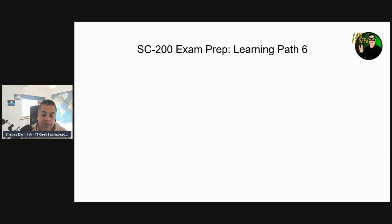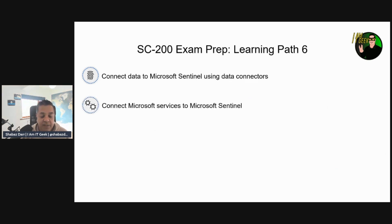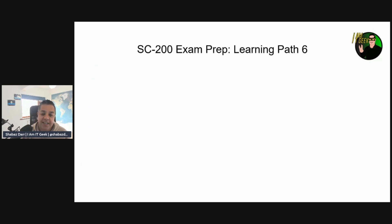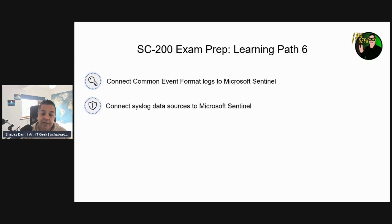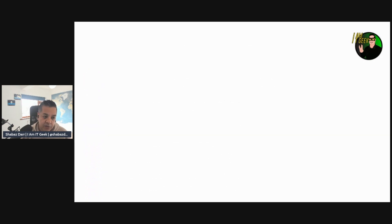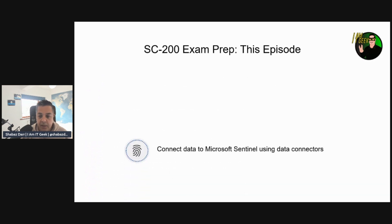Let's discuss what's in Learning Path 6 before we concentrate on what we're doing today. First, connecting data to Microsoft Sentinel using data connectors. Then connecting Microsoft 365 services to Microsoft Sentinel, and connecting Microsoft 365 Defender to Microsoft Sentinel. We'll also cover connecting Windows hosts to Microsoft Sentinel, connecting Common Event Format logs, connecting syslog data sources, and finally connecting threat indicators to Microsoft Sentinel.